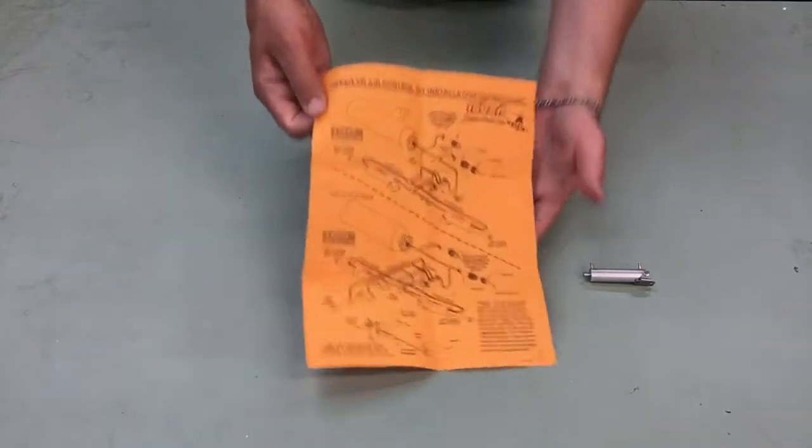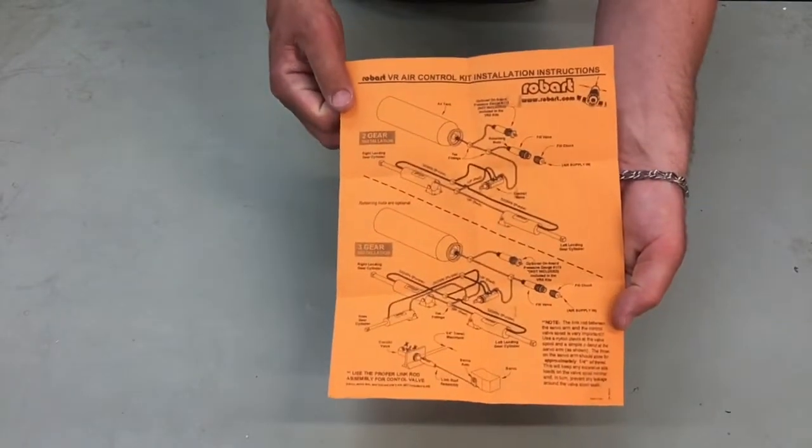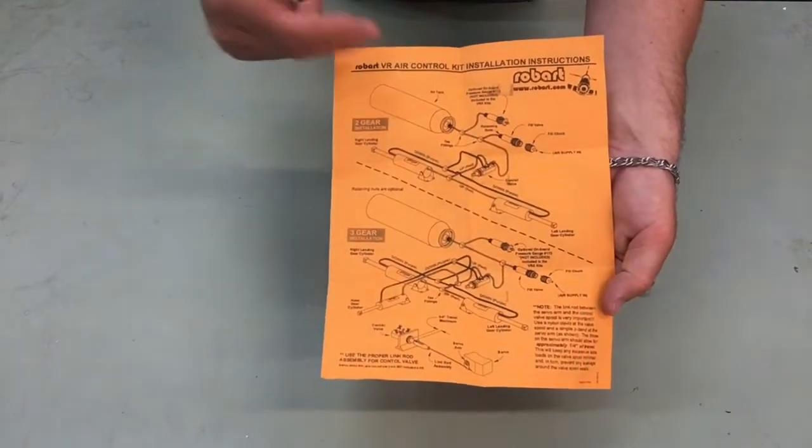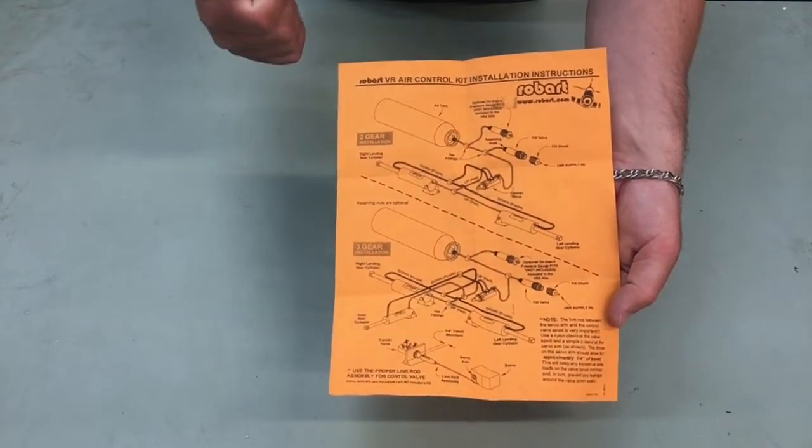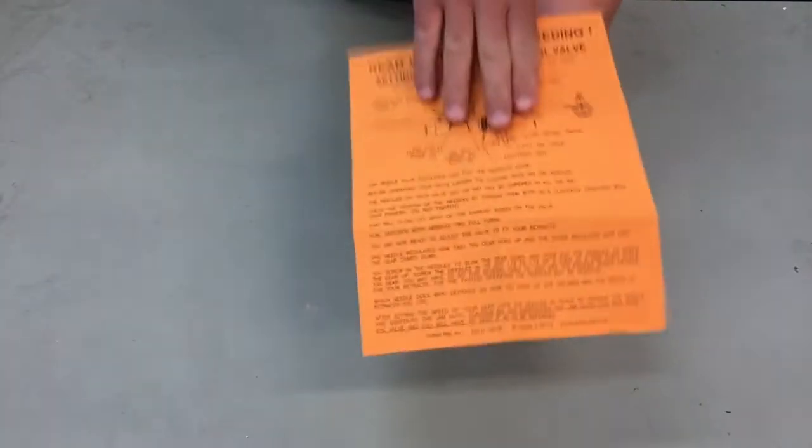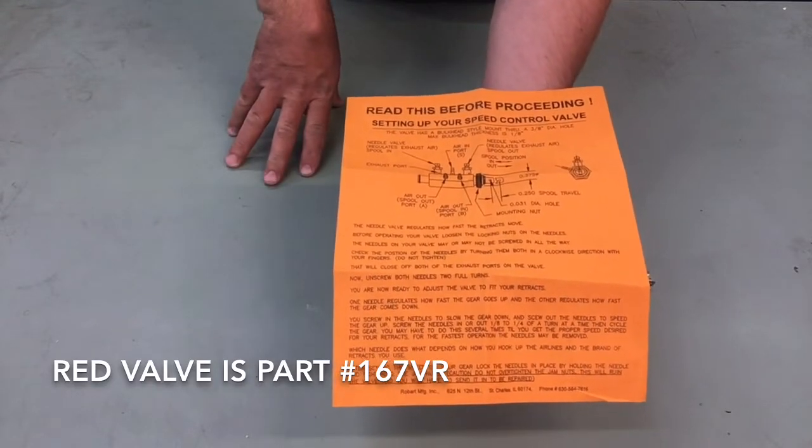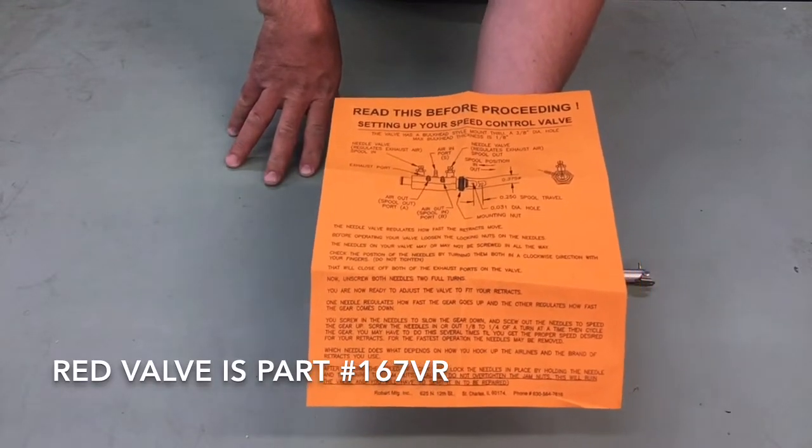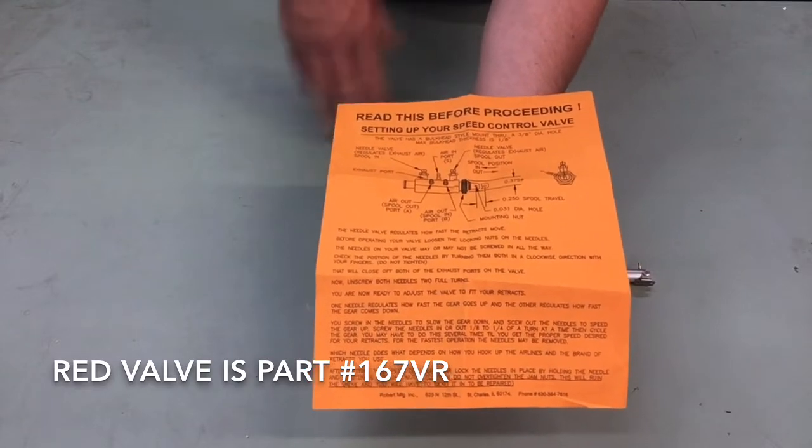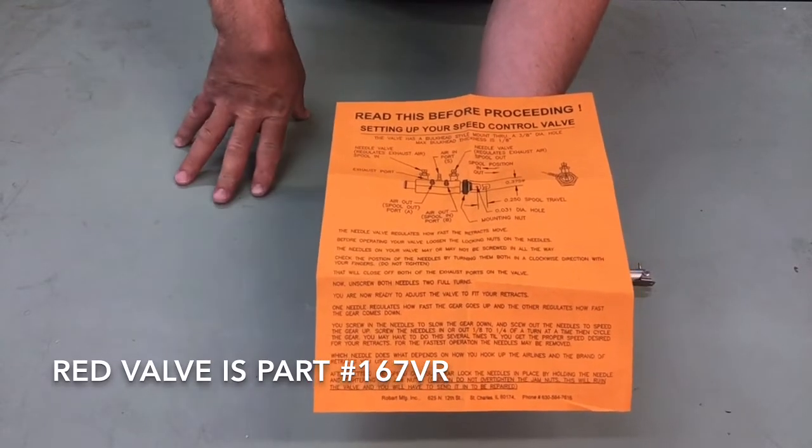First off you get your instructional diagram on how to set up a typical pneumatic air system. On the back of this also has how to set up your red valve. Red valves are typically used for these air cylinders so that you can control the speed of something such as a gear door on an RC aircraft.